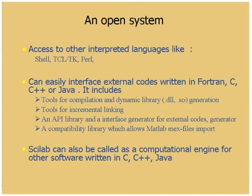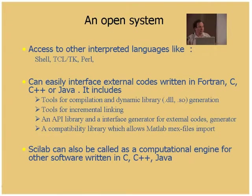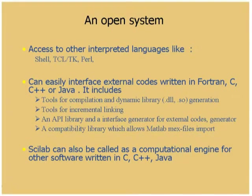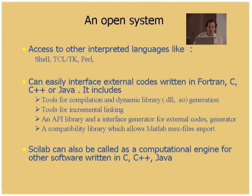Scilab is also an open system, open in the direction of other languages like the shell under Linux or Windows, TCL/TK, Perl, and now Java. It can easily interface external code written in Fortran, C, C++, or Java. You can easily generate dynamic libraries without worrying about the underlying operating system. There is an API library which allows you to write your interfaces manually if you want to write fine-grained interfaces.